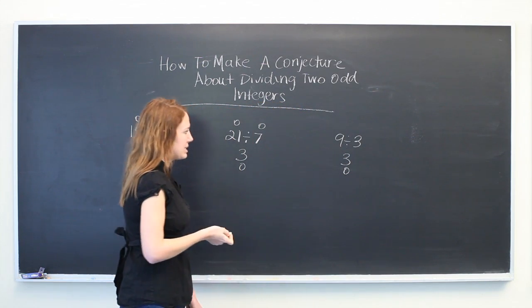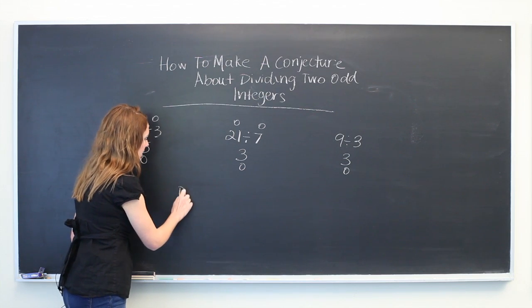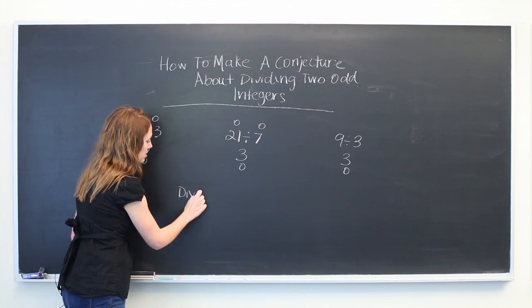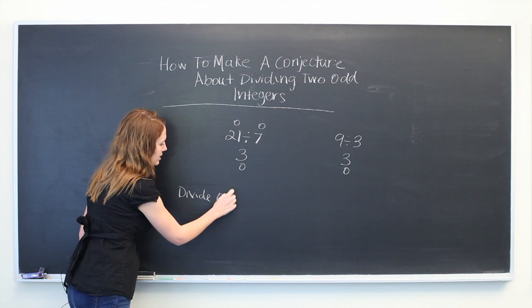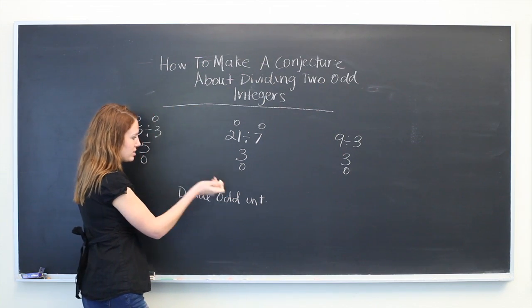So we could say that a possible conjecture would be: when you divide odd integers, your answer is odd.